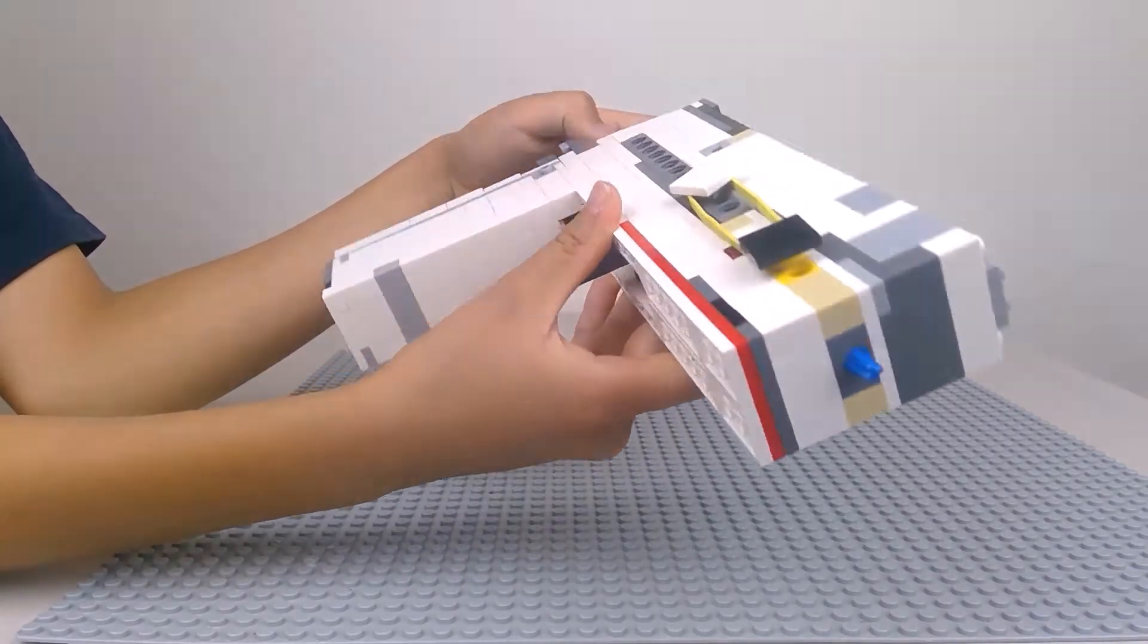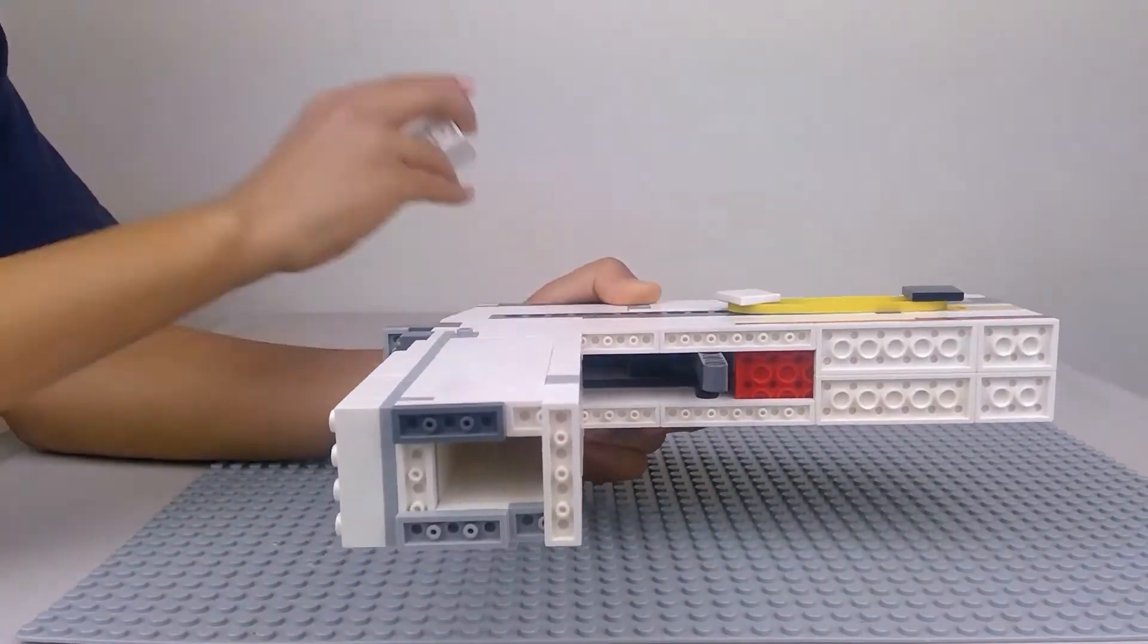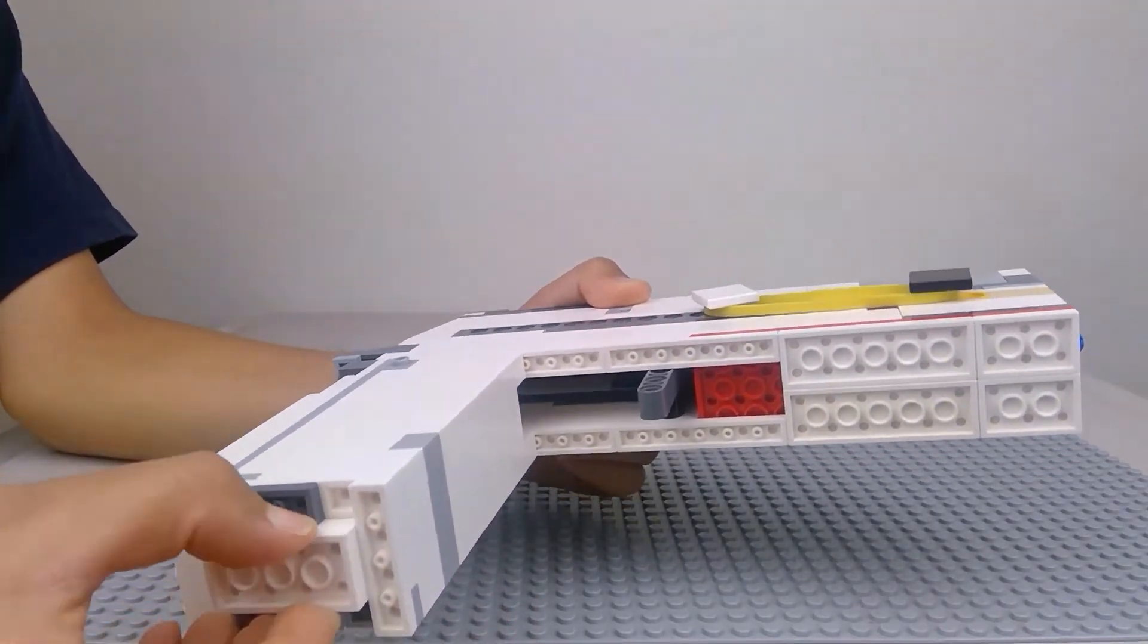Now taking a look at the bottom of the gun, we've got a hole for the magazine, and the magazine does fit in and you can take it out. Let's put it in, and you can take it out too.